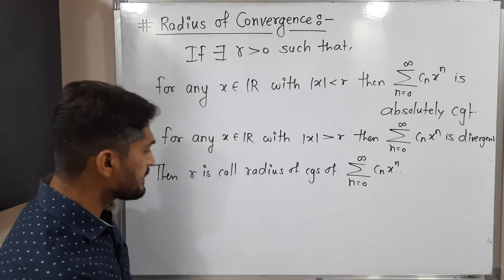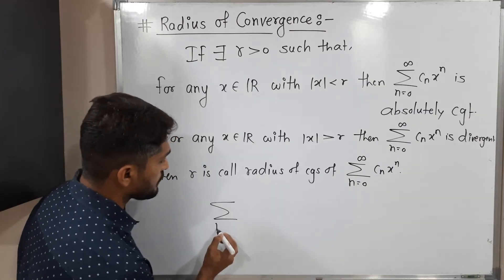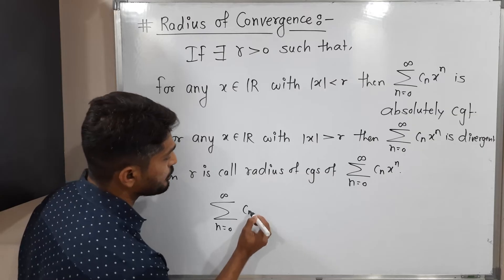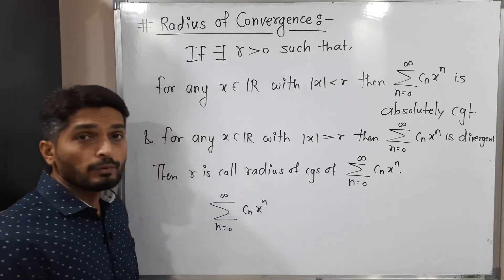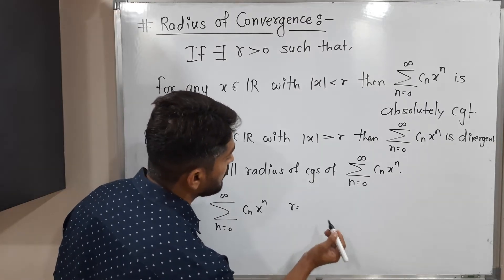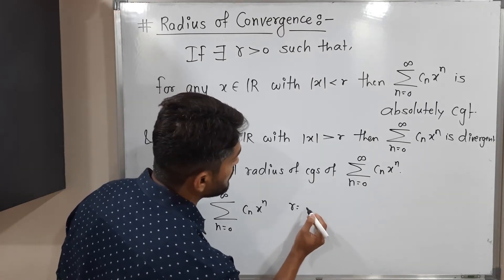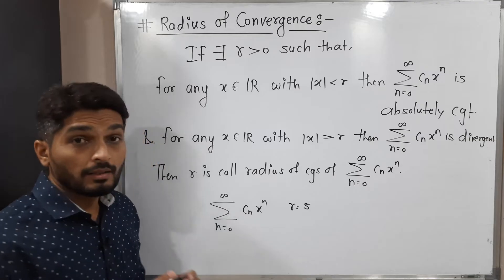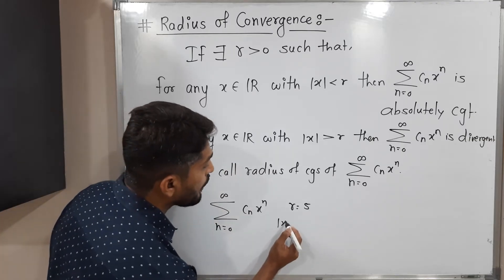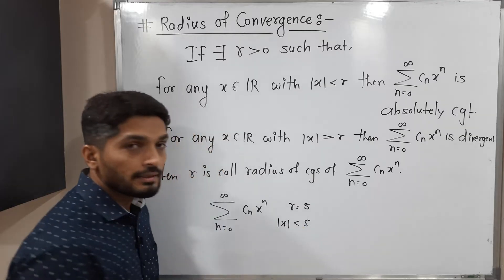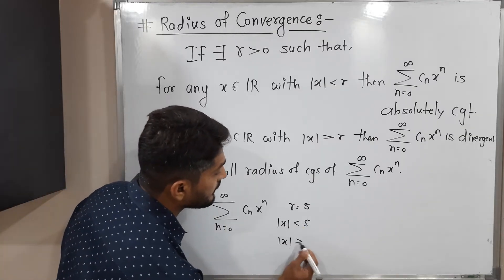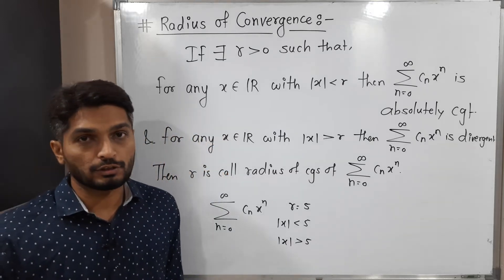Let us discuss one example. Suppose we have an arbitrary series c_n x raised to n, and we know that its radius of convergence is 5 — we generally denote it by r. Then this definition says: if |x| less than 5, then the series is convergent. And if |x| greater than 5, then the series is divergent.